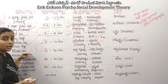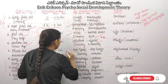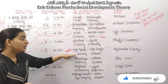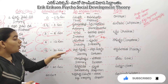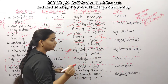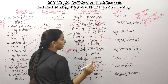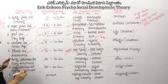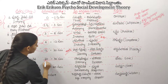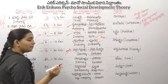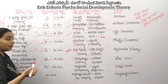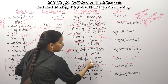Next is Kaumaradasam — adolescence. In this stage, we all know you are searching for identity. You are suddenly in the middle of this stage because you are living and developing your sense of self.